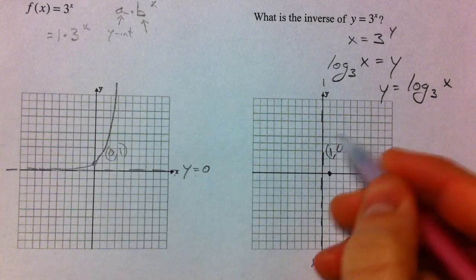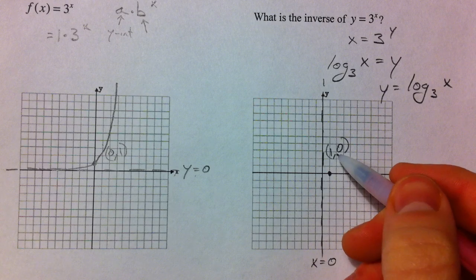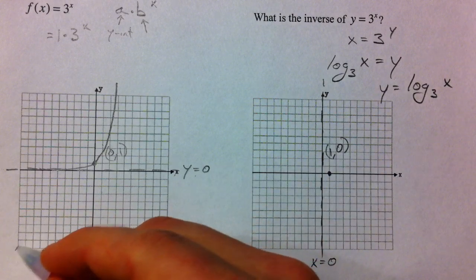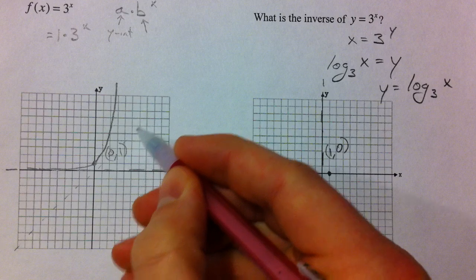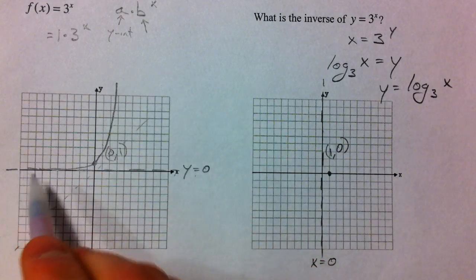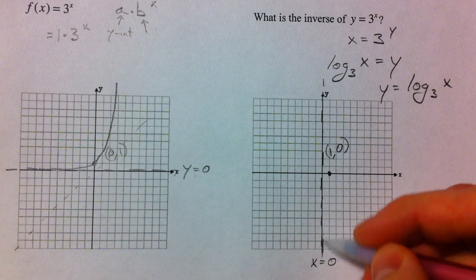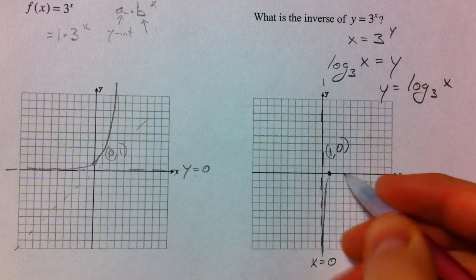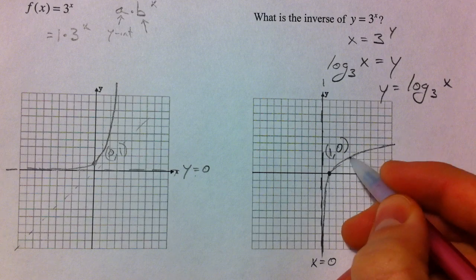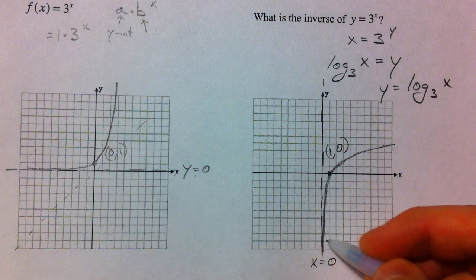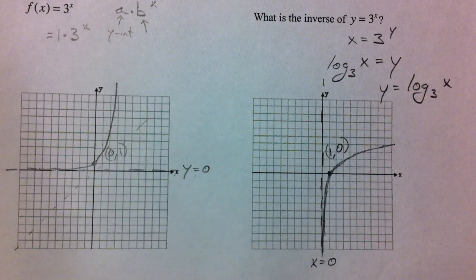Because everything is reversed itself. And so imagine that we talked about how the y equals x line is everything is reflected over there. So all these points over here are reflected over here, and so we're going to have a log graph that looks something like this. And now this is log base 3.